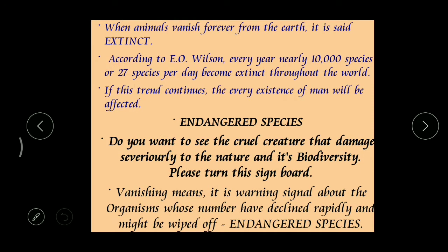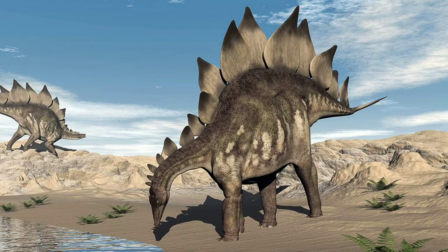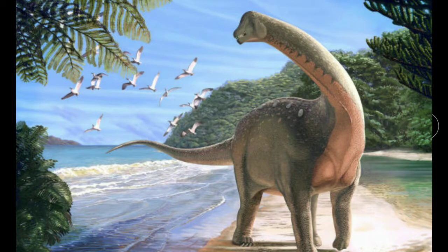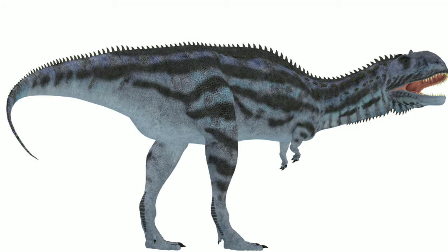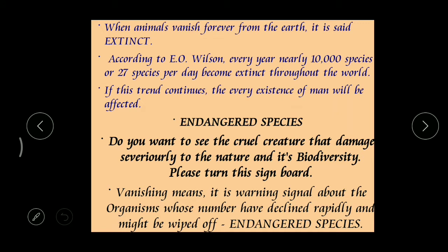When animals vanish forever from the earth, it is said to be extinct. Have you seen the movie Jurassic Park? That movie is completely based on dinosaurs. Can you find dinosaurs nowadays? No. They were present in our past but not now. Those animals completely disappeared from the face of the planet - such animals are considered extinct. A good example is the dinosaur.